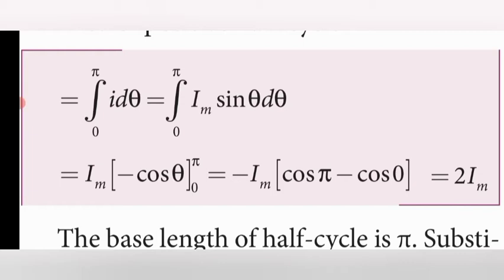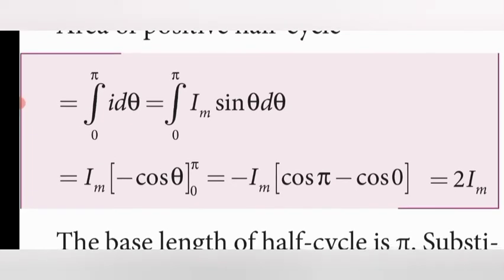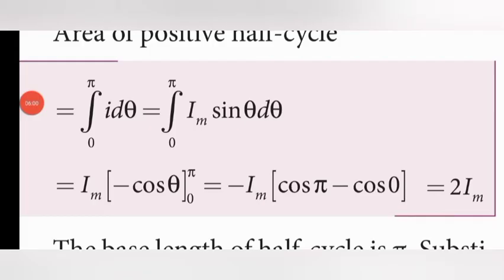Taking I_m as a constant outside, we integrate sin θ dθ, which gives −cos θ. Substituting the limits: = −I_m [cos θ] from 0 to π = −I_m (cos π − cos 0). Since cos π = cos 180° = −1 and cos 0 = 1, we get −I_m(−1 − 1) = −I_m(−2).